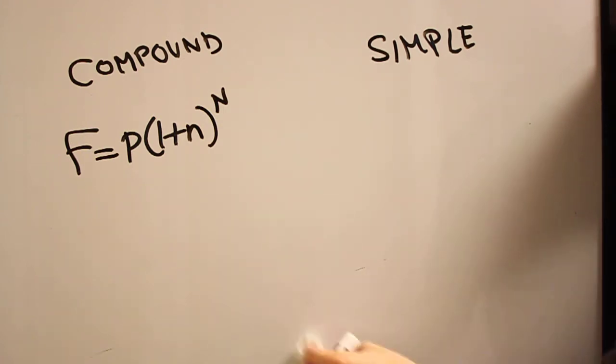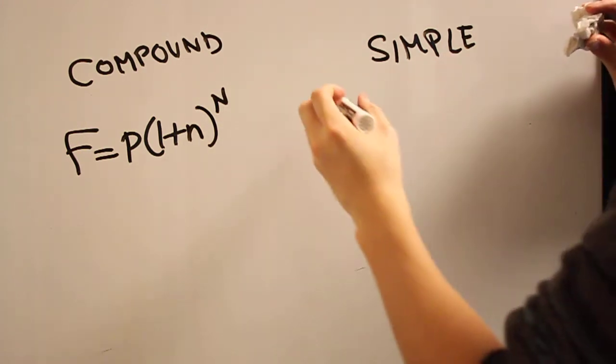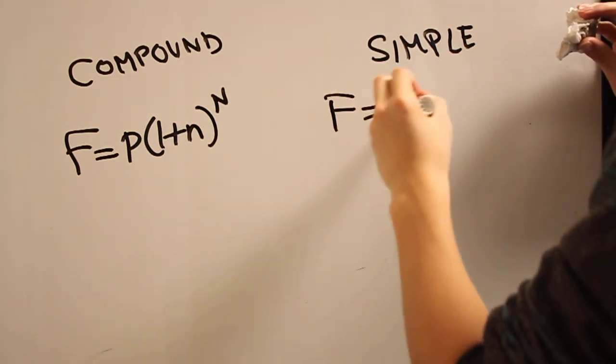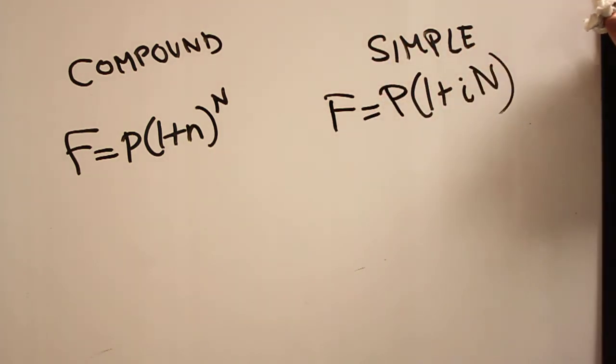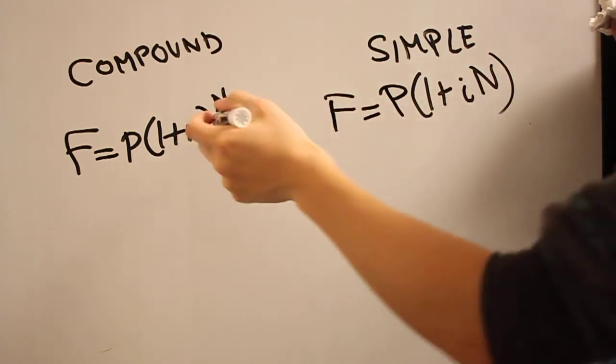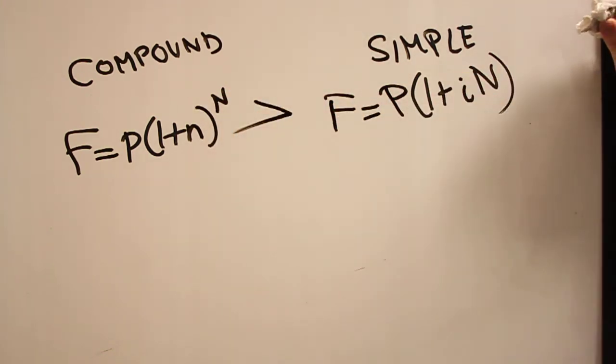So let's write this in very stark contrast to each other. Whereas in compounded interest, you'll have an exponent term. Here, it's all still multiplication. P(1 plus i*n). And always keep in mind, this is going to be bigger than this in terms of your final value.